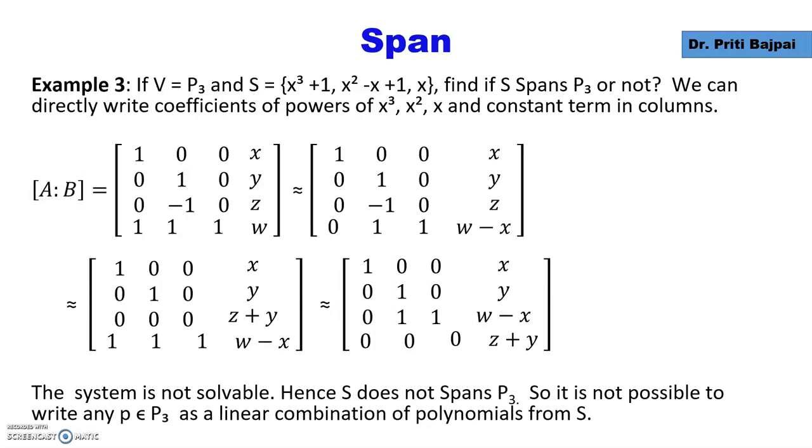The system is not solvable, hence we say that S does not span P₃. In other words, it is not possible to write any polynomial of P₃ as a linear combination of polynomials from S.